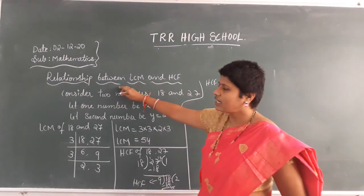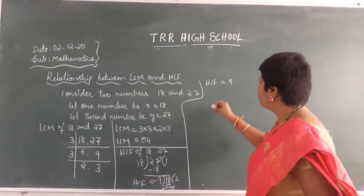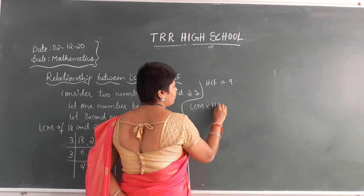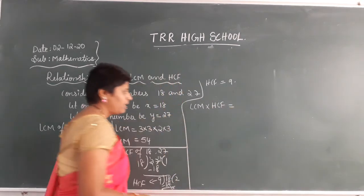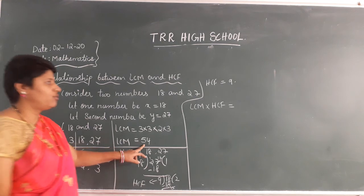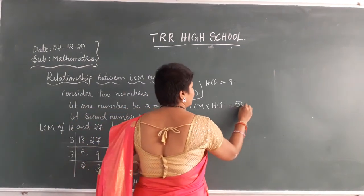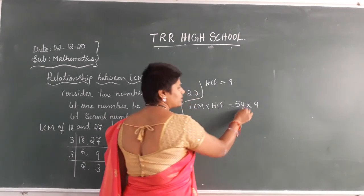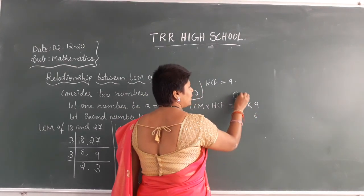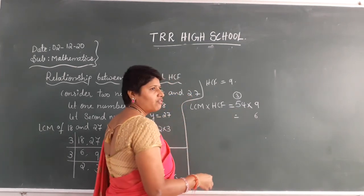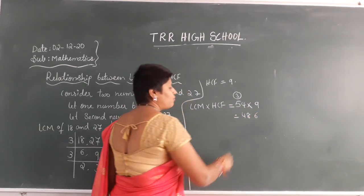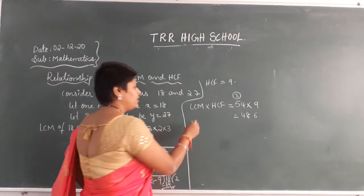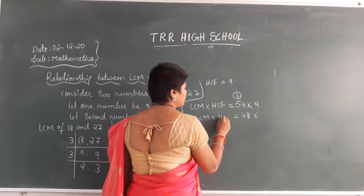Now I am trying to find the relationship. Now multiply LCM into HCM. LCM is 54, HCM is 9. So 9 fours are 36, write 6 carry 3. 9 fives are 45, plus 3 gives 48. So 54 × 9 = 486. This is your product of LCM and HCM.